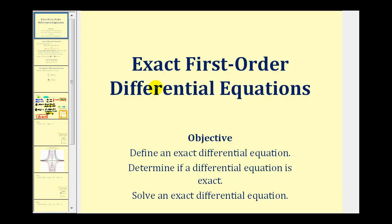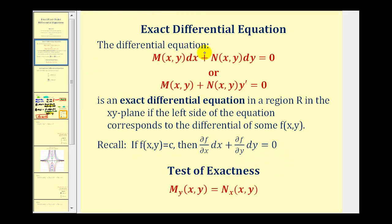Welcome back to the second part of the lesson on exact first order differential equations. Let's start with a quick review. The differential equation M(x,y) dx plus N(x,y) dy equals zero is an exact differential equation in a region R in the xy-plane if the left side of the equation corresponds to the differential of some function f(x,y).